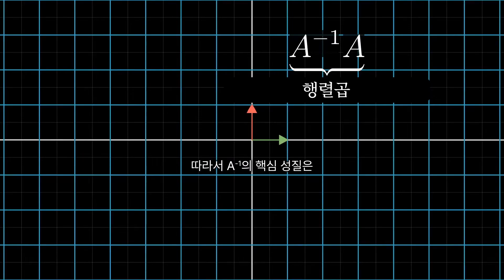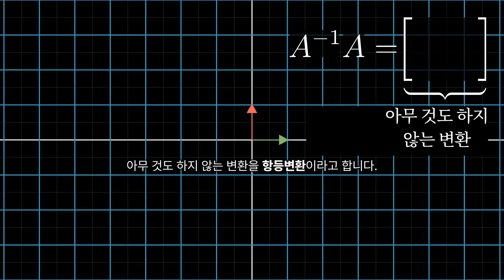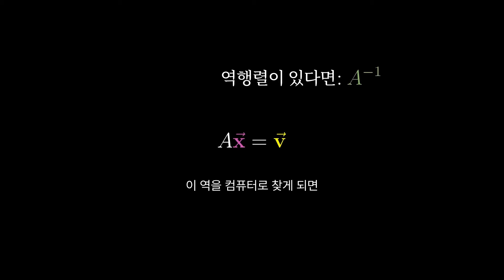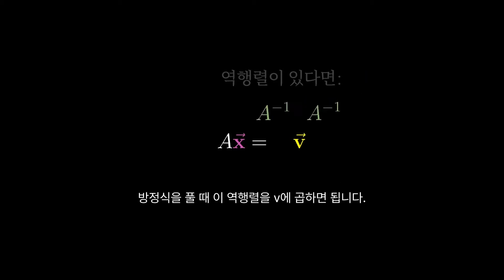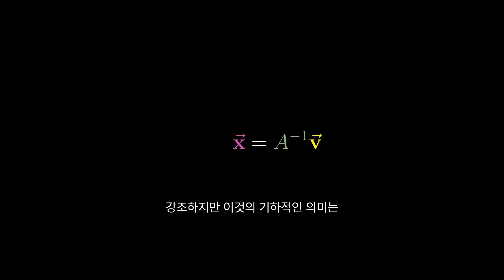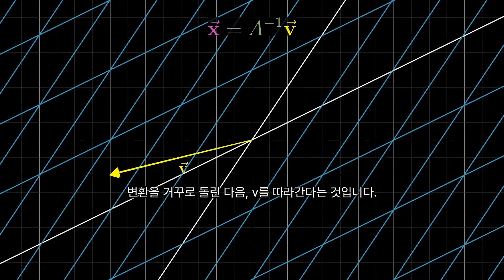Applying one transformation after another is captured algebraically with matrix multiplication. So the core property of this transformation A-inverse is that A-inverse times A equals the matrix that corresponds to doing nothing. The transformation that does nothing is called the identity transformation — it leaves i-hat and j-hat each where they are, unmoved, so its columns are (1, 0) and (0, 1). Once you find this inverse, which in practice you'd do with a computer, you can solve your equation by multiplying this inverse matrix by v. What this means geometrically is that you're playing the transformation in reverse and following v.